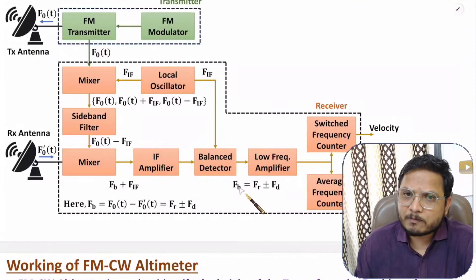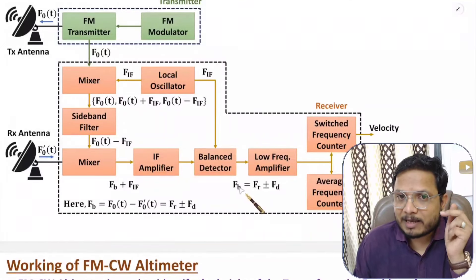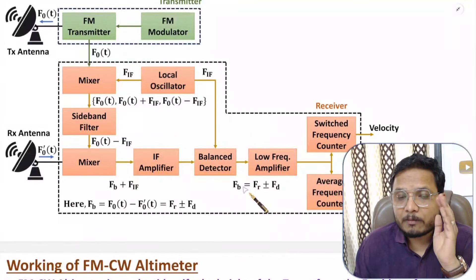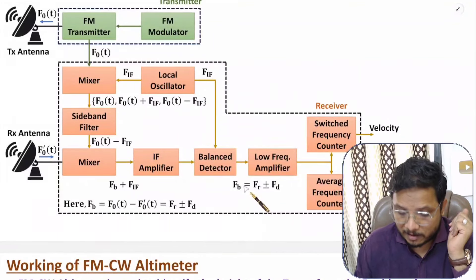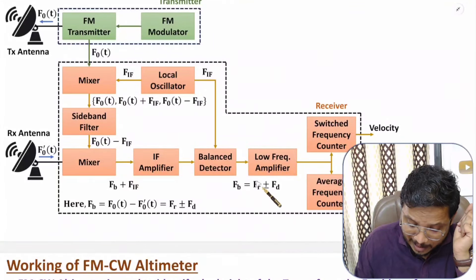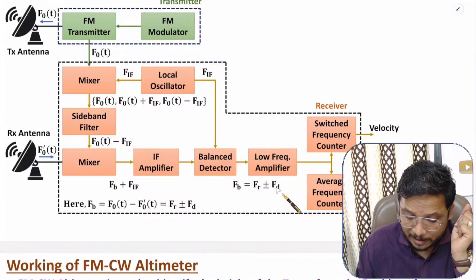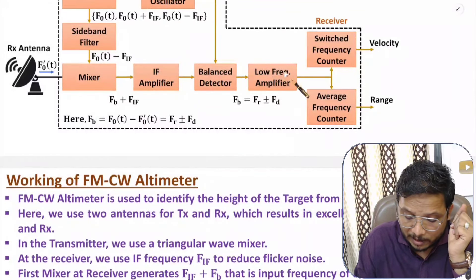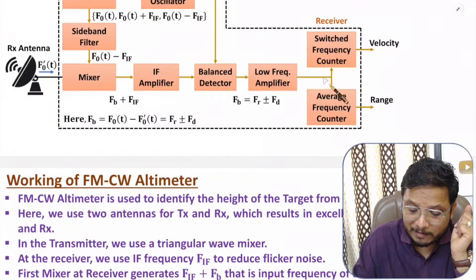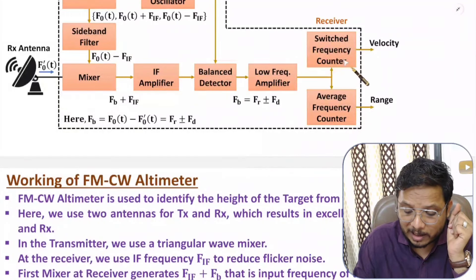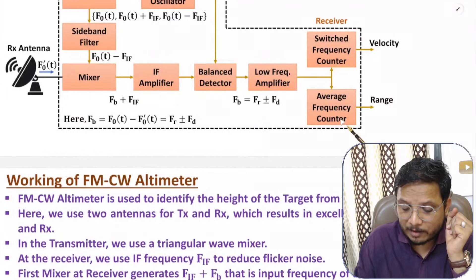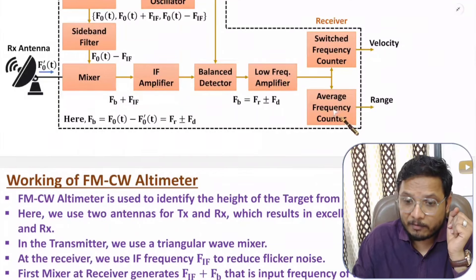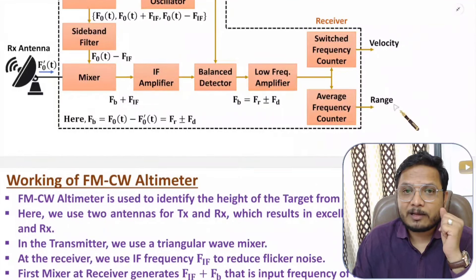Beat frequency FB is FR plus or minus FD — a combination of range frequency and Doppler frequency. This beat frequency is given to a low frequency amplifier, and after that it is given to a switched frequency counter and an average frequency counter, by which we can identify velocity and range.